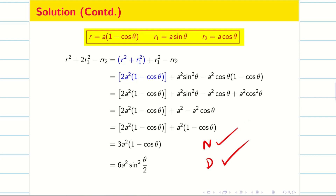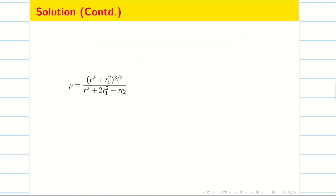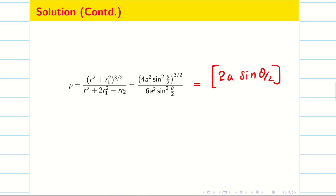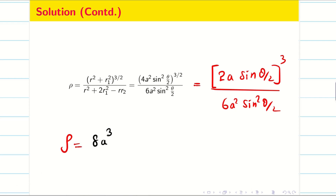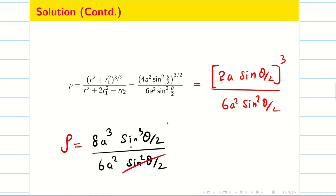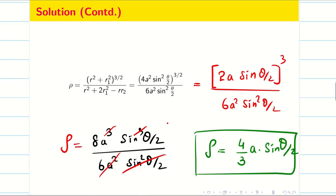Now substituting into the formula: ρ = (4a²sin²(θ/2))^(3/2) divided by 6a²sin²(θ/2). Taking the square root in the numerator gives (2a·sin(θ/2))³ = 8a³sin³(θ/2). So ρ = 8a³sin³(θ/2) divided by 6a²sin²(θ/2). Cancelling sin²(θ/2) and a², the radius of curvature is ρ = (4/3)a·sin(θ/2) for the cardioid r = a(1 − cosθ).